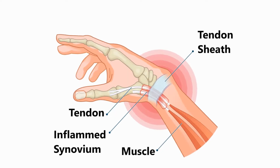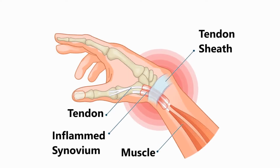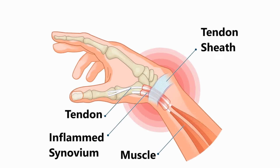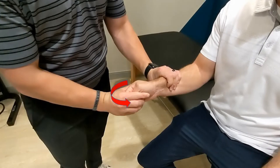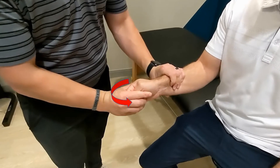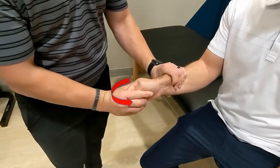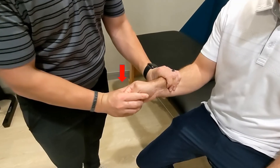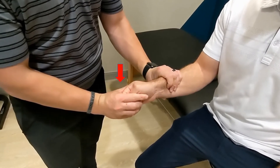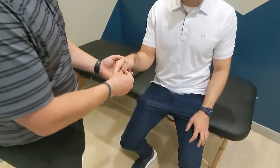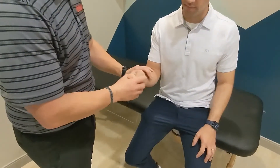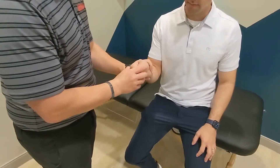Engelstein's test is a provocative maneuver used to help diagnose DeQuervain's tenosynovitis. The patient is asked to make a fist around their thumb in a neutral position. The patient then either actively or passively applies ulnar deviation. A positive test is pain with ulnar deviation, especially radiating up the forearm.